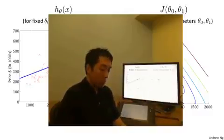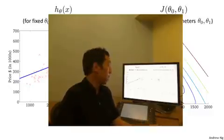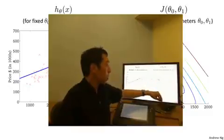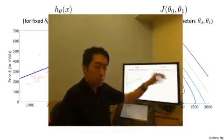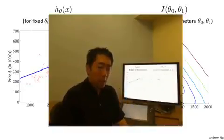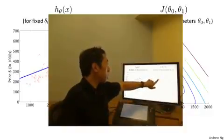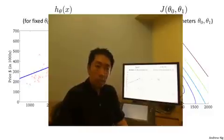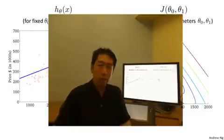And in fact, we'll see later that when we look at more complicated examples, we'll have higher dimensional figures with more parameters that we'll see in later in this course examples where this figure cannot really be plotted and it becomes much harder to visualize. And so what we want is to have software to find the value of theta 0, theta 1 that minimizes this function. And in the next video, we'll start to talk about an algorithm for automatically finding that value of theta 0 and theta 1 that minimizes the cost function j.